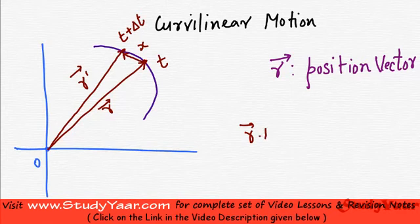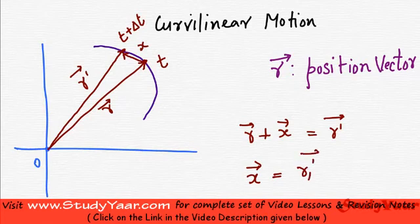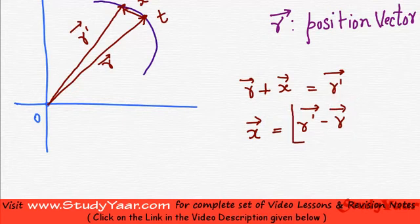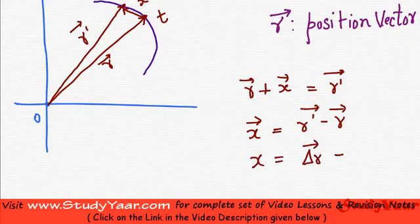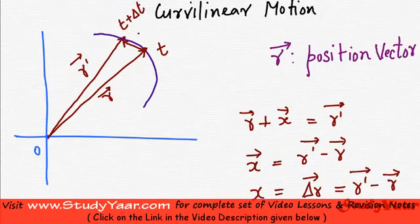So what you have is r plus x vector equals r dash vector, by the triangle law of vectors. So my x vector is basically r dash vector minus r vector. This r dash is basically my change in displacement — r dash is displacement at instant t plus delta t, and r is displacement at instant t. Therefore x is delta r vector, which equals r dash vector minus r vector. So this is delta r.